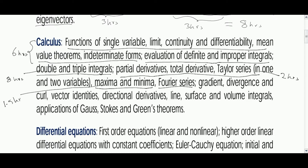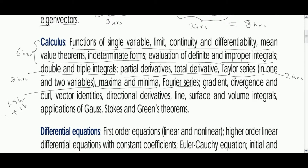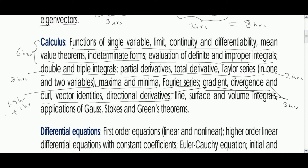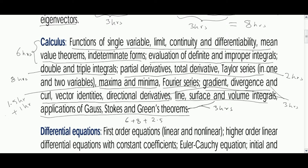Fourier series is a very small concept not frequently asked in GATE Mechanical Engineering except one or two questions in recent papers. For Vector Calculus — gradient, divergence, curl, vector identities, and directional derivatives — these will take around three hours. Line, surface, and volume integrals and application of Gauss, Stokes, and Green's theorems are frequently asked, so I have given three hours for those as well. Total hours required for Calculus including Vector Calculus is approximately 25 hours.